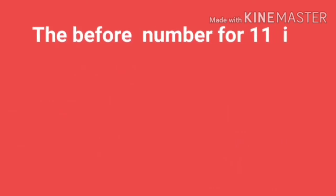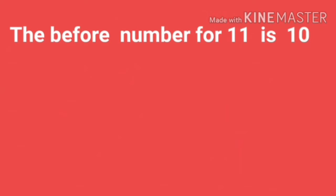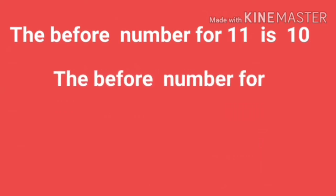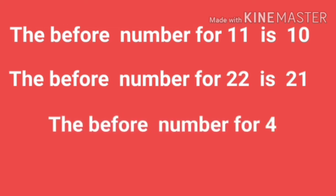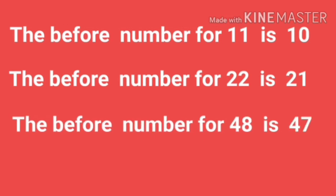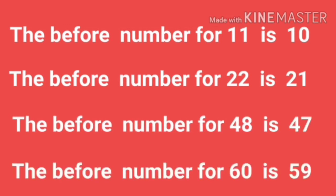Let us solve the series now. The before number for 11 is 10. The before number for 22 is 21. The before number for 48 is 47. The before number for 60 is 59. The before number for 97 is 96.